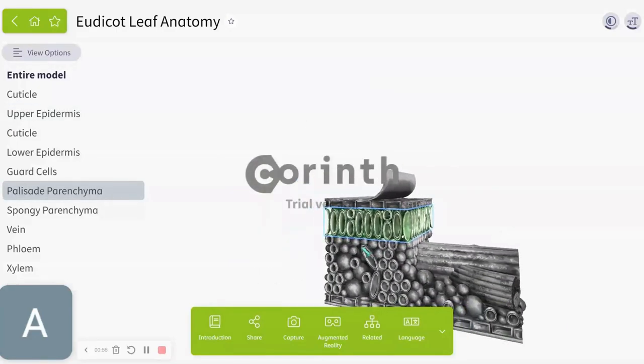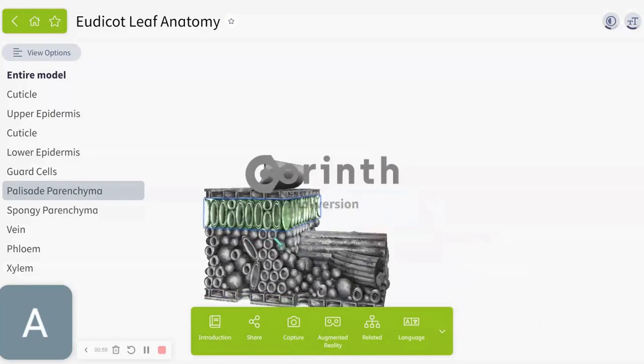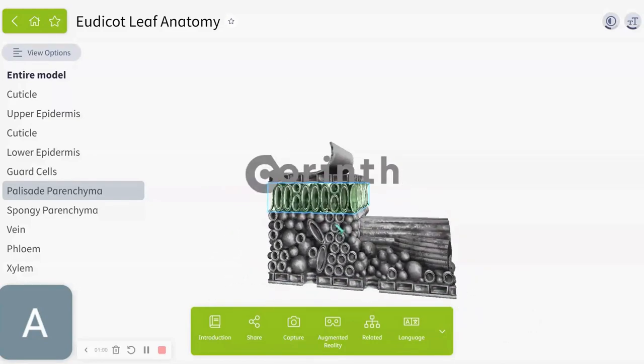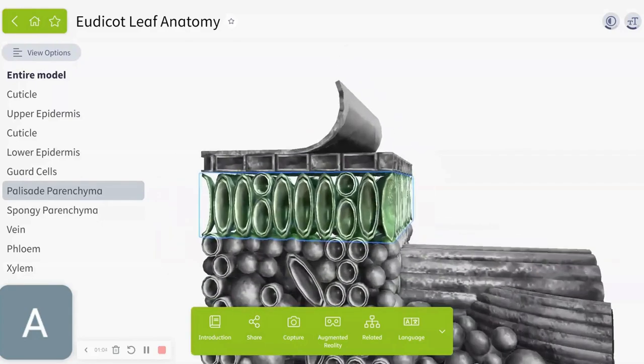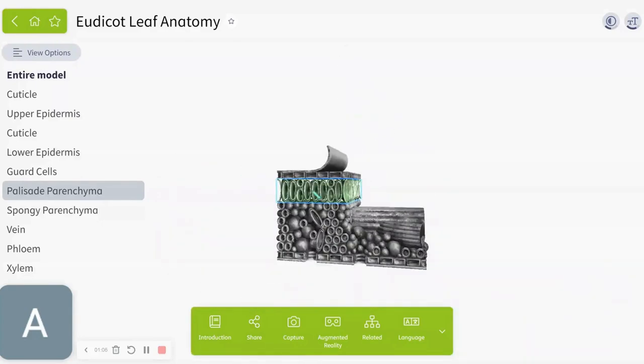Up there is the palisade parenchyma. Basically it's the layer that contains all the chloroplasts, most of them at the least. Chloroplasts are basically sections of a plant cell that take in sunlight and convert it into energy, basically doing photosynthesis.